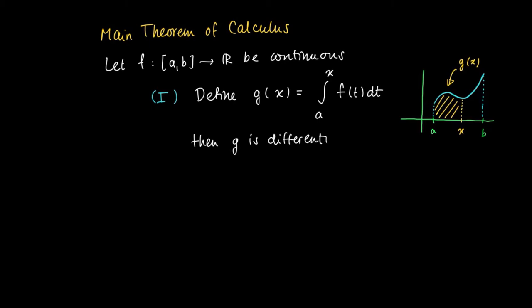Well by varying x over the interval we get of course a function and the first part of the main theorem of calculus says that g is a differentiable function on the open interval ab. And moreover if we take a derivative of this function we get f back.